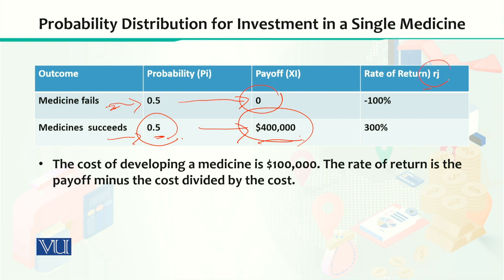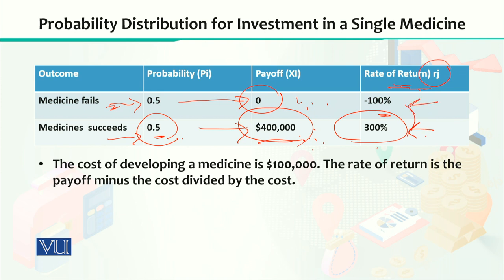If we calculate the rate of return, given by rj, the formula is: payoff minus cost, divided by cost. So, $0 minus $100,000 divided by $100,000 gives minus 100%. And $400,000 minus $100,000 divided by $100,000 gives a rate of return of 300%. So if your medicine is successful, your rate of return will be 300%. If your medicine fails in the market, your rate of return would be minus 100%.